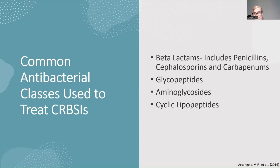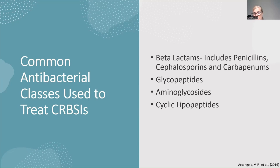In the glycopeptide class, vancomycin covers most gram-positive organisms and is the drug of choice for MRSA. Aminoglycosides provide great gram-negative coverage but have a very narrow therapeutic index, so patients must be monitored closely for oto- and nephrotoxicity. Cyclic lipopeptides like daptomycin have great gram-positive coverage and are used to treat both MRSA and VRE.